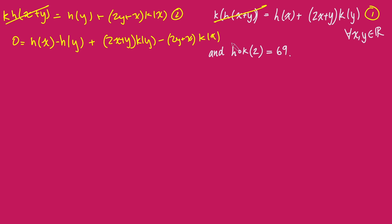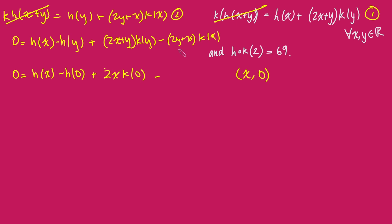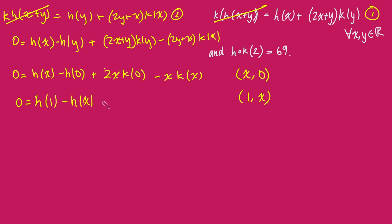Now I'm going to choose three pairs of values for x and y to substitute in, giving three equations that simplify really nicely. First, plugging in x and 0: 0 equals h of x minus h of 0, plus 2x times k of 0, minus x times k of x. Next, substituting x equals 1 and y equals x: 0 equals h of 1 minus h of x, plus 2 plus x times k of x, minus 2x plus 1 times k of 1.